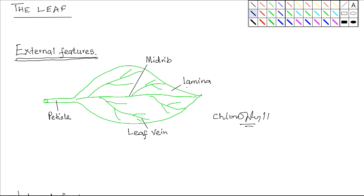The lamina of the leaf is quite thin. Most plants have a thin lamina. This is to reduce the distance that light penetrates in order to get to the photosynthetic tissues.